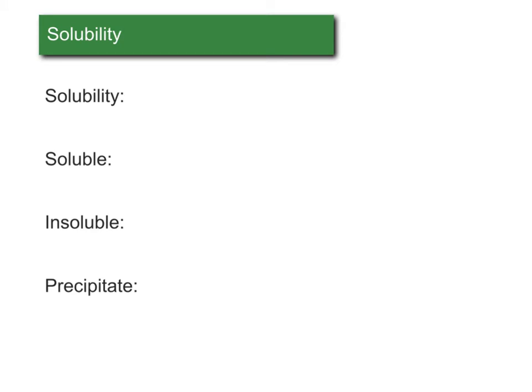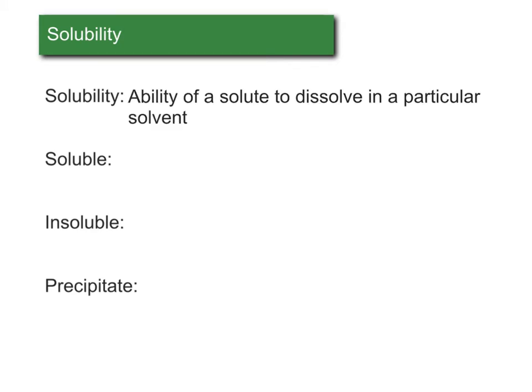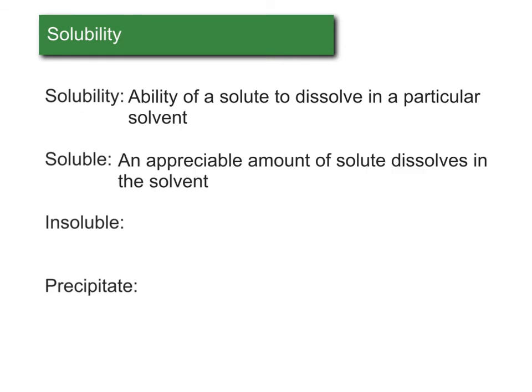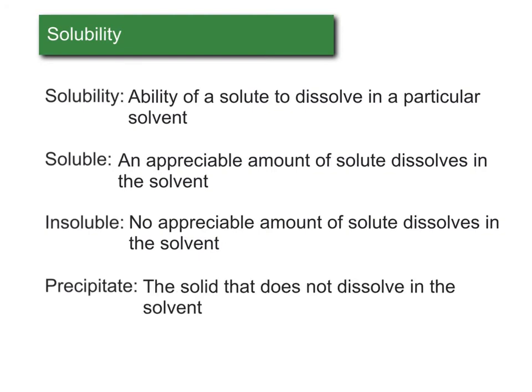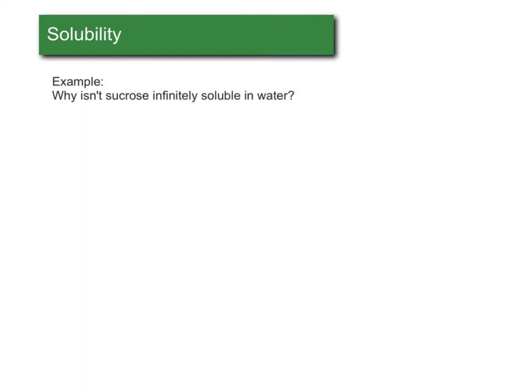Now let's talk about solubility. Solubility is the ability of a solute to dissolve in a solvent. For example, the solubility of sugar tells us whether sugar is able to dissolve in water. Soluble means that some appreciable amount of it will dissolve. Generally, either something dissolves or it doesn't — soluble means some amount does dissolve, and insoluble means no appreciable amount dissolves. A precipitate is a word that means the solid in a solution that doesn't dissolve.